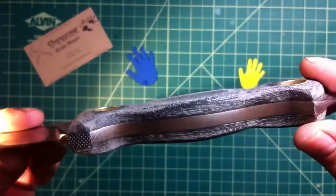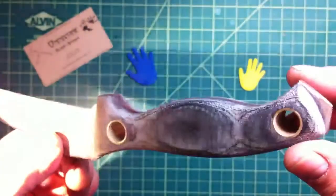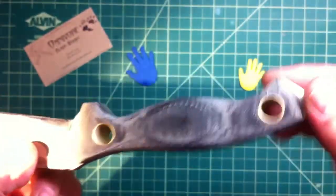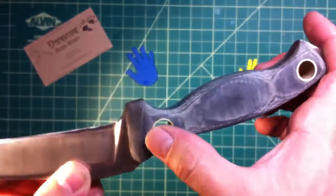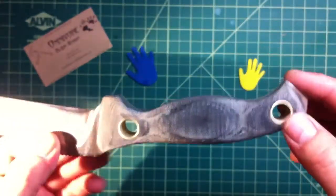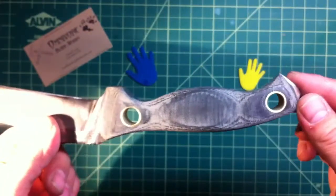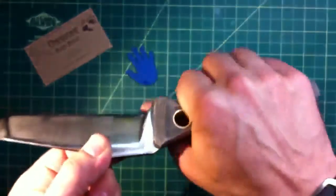Black canvas micarta handle, it was pre-cut by Jared for me, nice pommel on the back. He uses big half inch pins, hollow tubes. Great.